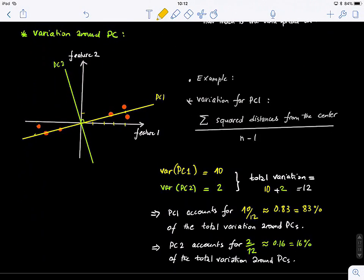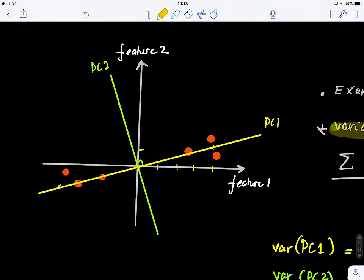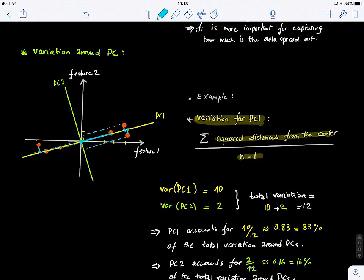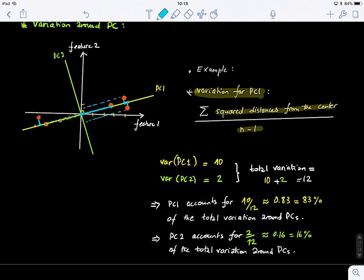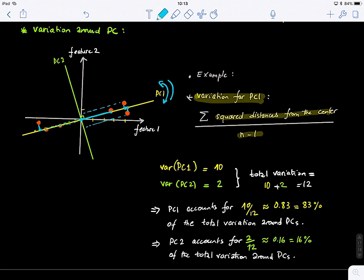And then, the variation around the principle components. So this is another thing we can look at. So what does this mean? For example, here we take the sum. So we want to compute the variation for the first principle component. So we take the sum of the squared distances of the projected points from the center and divide by the number of points minus one. So let's look at this figure. So what does this mean? It means that we have our points, we project them onto PC1. And then we compute the sum of all these distances. So we just sum the distance to the center and divide by the number of samples minus one. So then we get, what we get? We get the variation of the data around PC1. And let's say, for example, in this case, we get 10 for PC1.